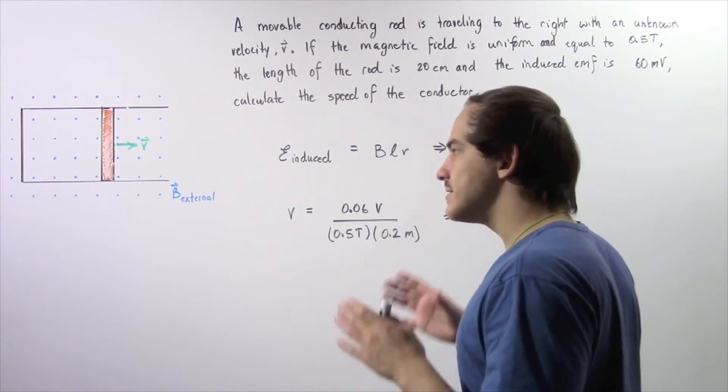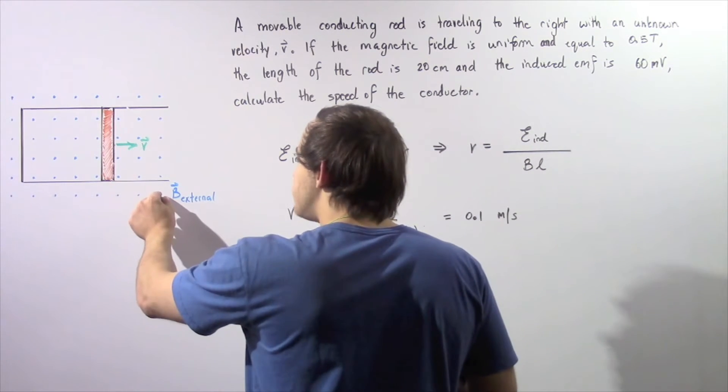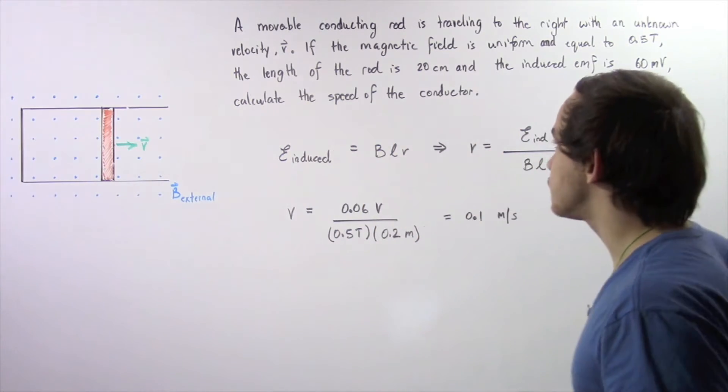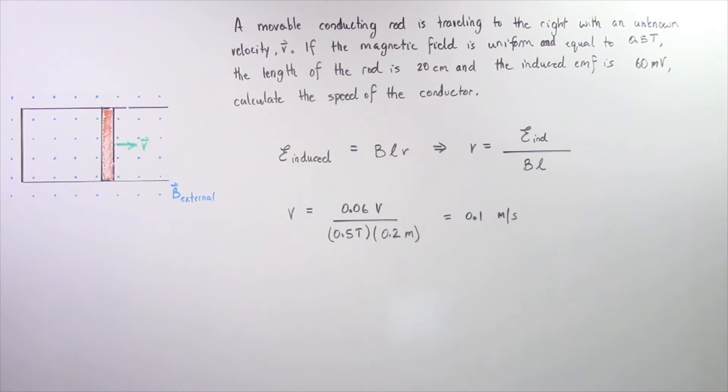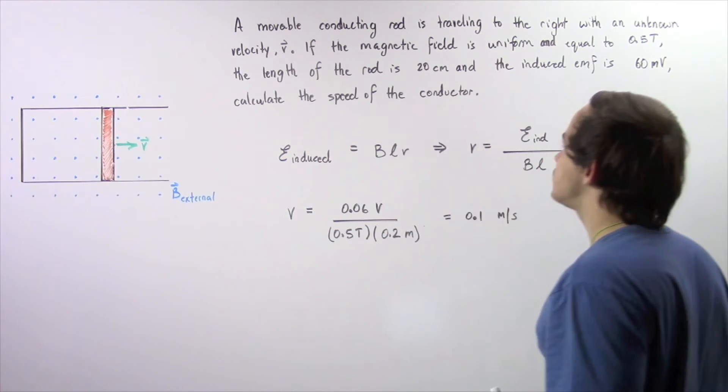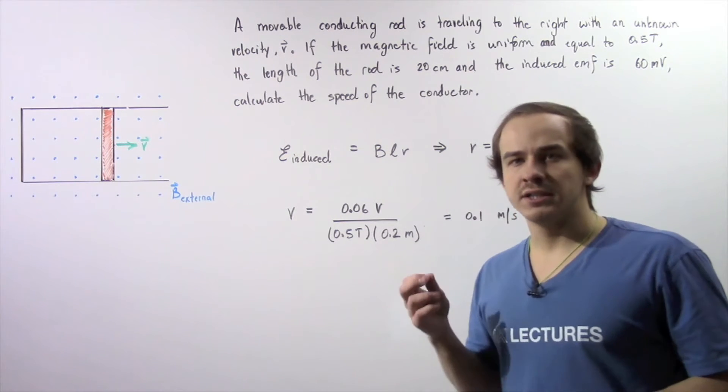This entire system lies within an external magnetic field B that points out of the board as shown by the following blue dots. If the magnetic field is uniform and equal to 0.5 teslas, the length of the rod is 20 centimeters, and the induced EMF within our wire is 60 millivolts, we want to calculate the speed of our conductor, the magnitude of our unknown velocity.